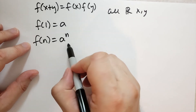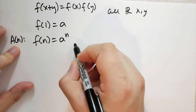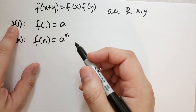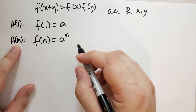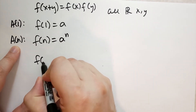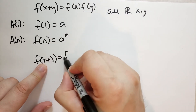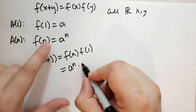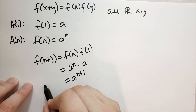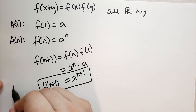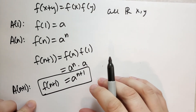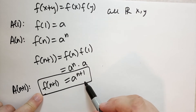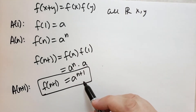So A(n) is the statement f(n) = aⁿ. A(1) is already true because we've said so. Now we assume A(n) is true and prove it for n+1. What is f(n+1)? That's f(n)·f(1). We're assuming f(n) = aⁿ, so that's aⁿ times a, which equals a^(n+1). So f(n+1) = a^(n+1), which is exactly the statement A(n+1). We've proven it for all integers 1 or more.